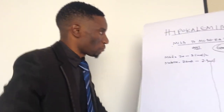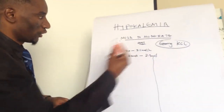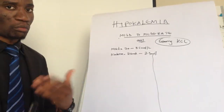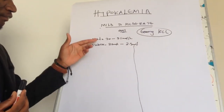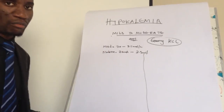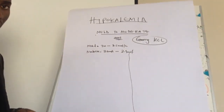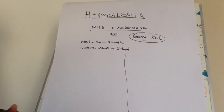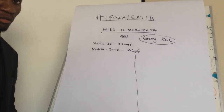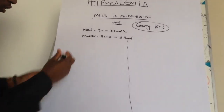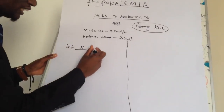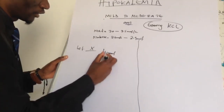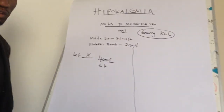Let's go together. As you can see in this table, I've put guidelines with different benchmarks. Mild hypokalemia is 3.0 to 3.5 mmol/L, and moderate hypokalemia is 2.5 to 2.9 mmol/L. Let's assume we have patient X who needs 40 millimoles of potassium to correct their hypokalemia.